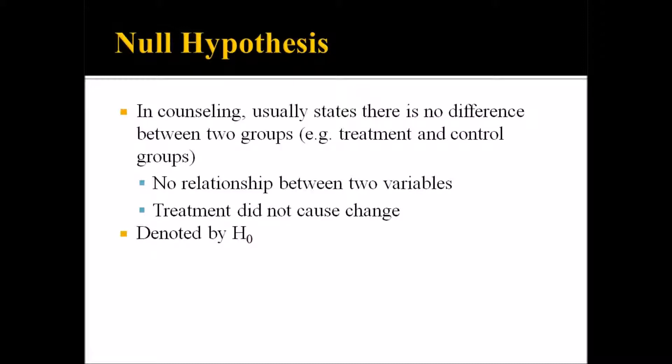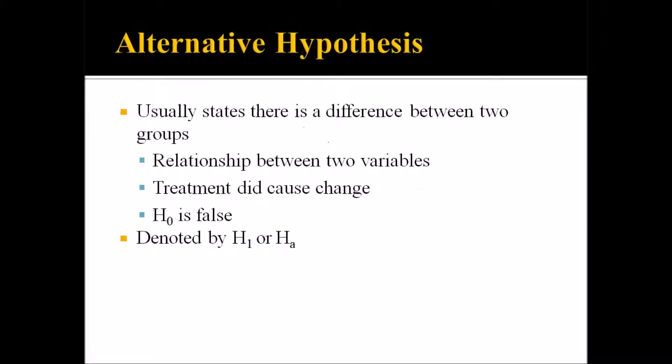The null hypothesis is denoted by H0. Whenever you have a null hypothesis, you have an alternative hypothesis. In counseling research, it usually states there is a difference between two groups, there is a relationship between two variables, and the treatment did cause or is associated with a change. The alternative hypothesis also states that the null hypothesis is false, and is denoted by H1 or HA.